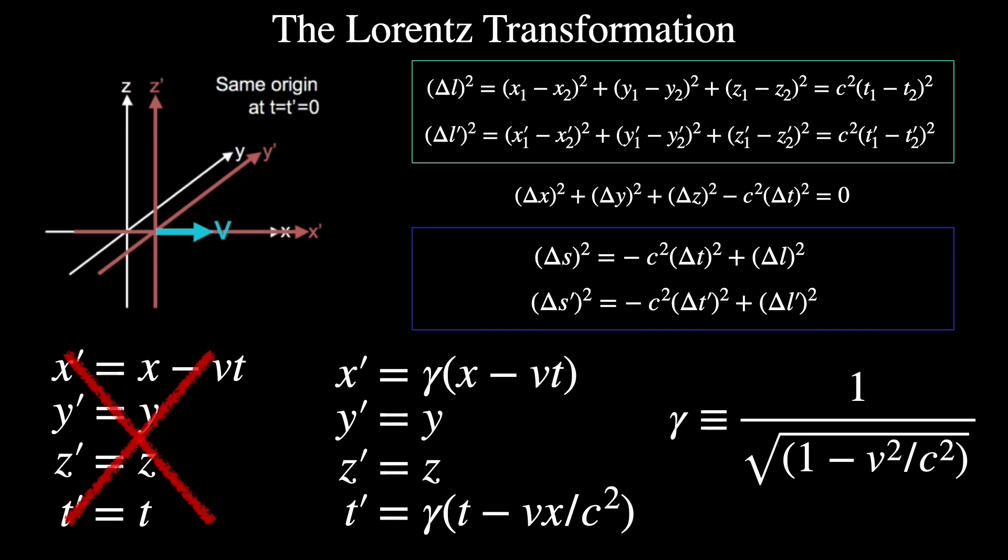Now, Einstein's postulate is that all observers see the same speed of light. So c is the same for both equations. We don't put any requirements on any other measurements to be the same, however. Indeed, they can't all be the same. The frames are moving with respect to each other.